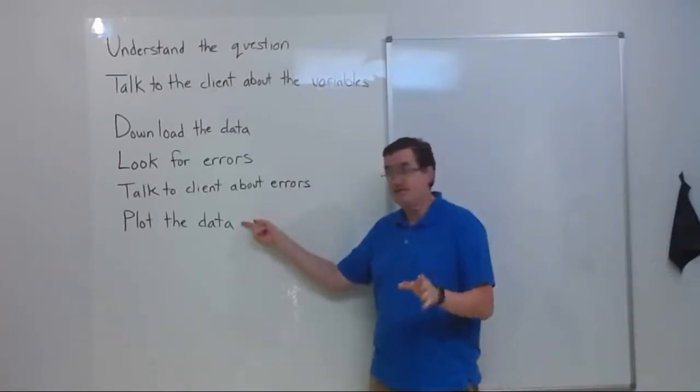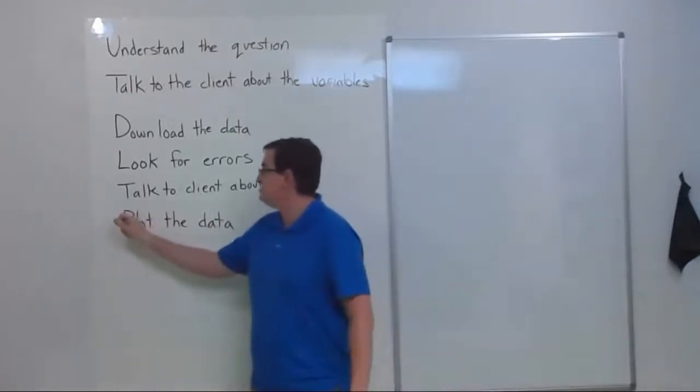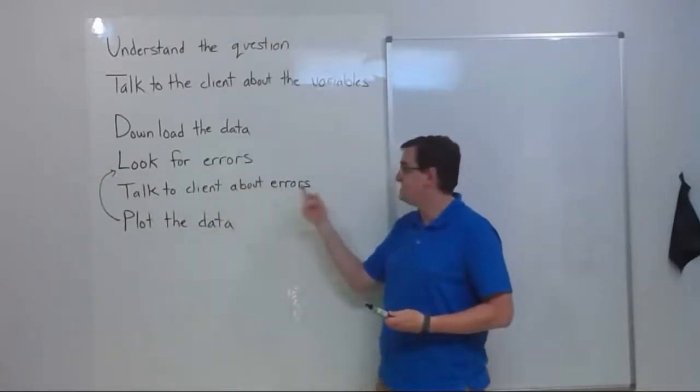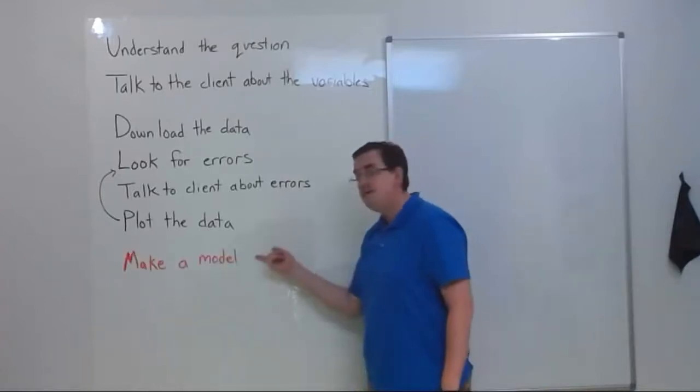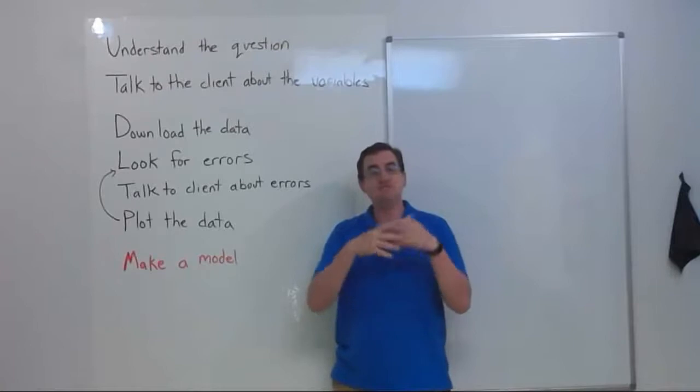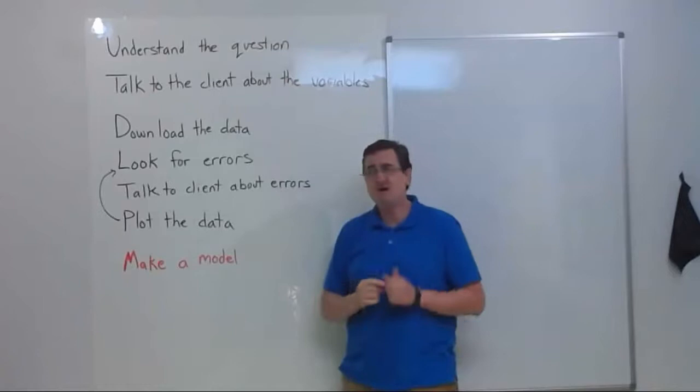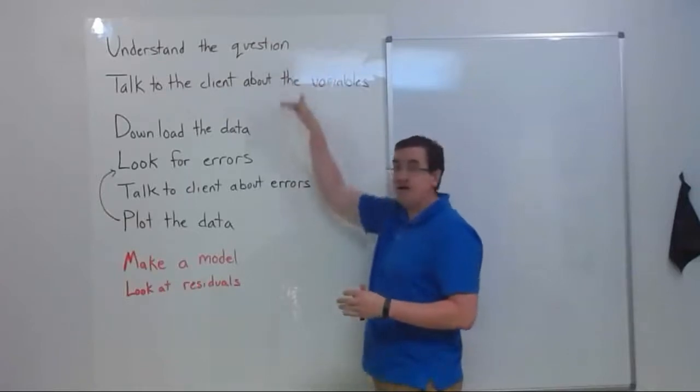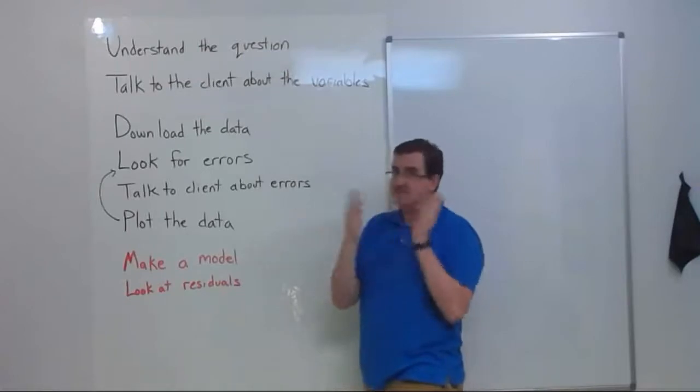I have plot the data here. Plotting the data sometimes helps you look for the errors. So there probably should be some sort of loop right here where you're plotting and looking for errors. In real life, talking to the client, shooting them an email. Hey, I found this weird thing. Is that legit? Finally we have make a model and this is what people think statistics really is, is that it starts right here. The truth is this kind of stuff often takes half your time in real life. So don't feel like time spent here is not doing statistics. This absolutely is a legit part of being a statistician.